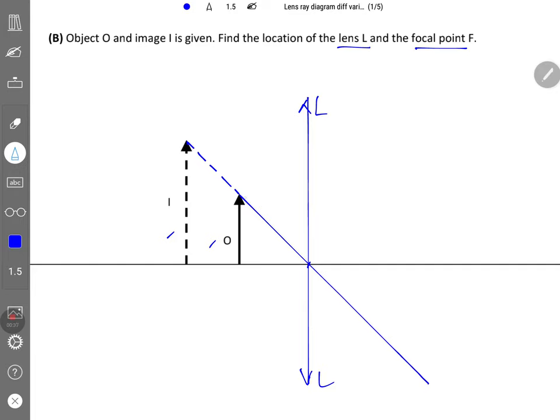The next step you need to do is from the object, you draw a parallel line that's parallel to the principal axis, after which it should bend and pass through F. But you're supposed to find the F, so the reference is from the tip of the image to this point here.